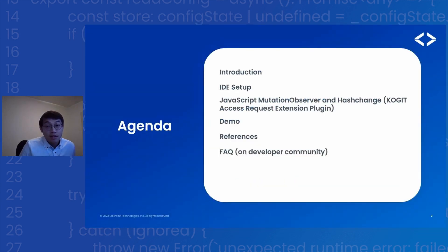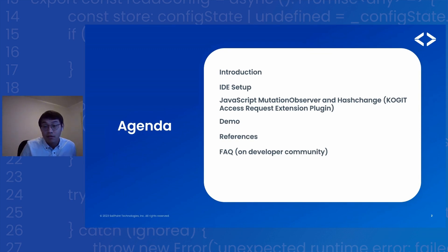Here's the agenda of today's session. We will start with a short introduction and then we will align on the IDE used in this practice. In this session, we use part of the code from the Colgate Access Request Extension Plugin to demonstrate how JavaScript Mutation Observer benefits IQ plugin development. After that, there will be a demo session and reference materials. There will be no Q&A session — please leave your questions in the chat or on the developer community post.